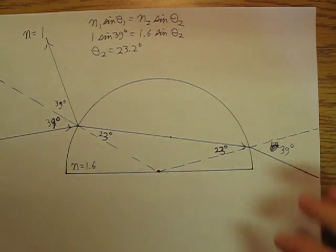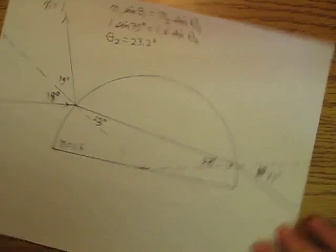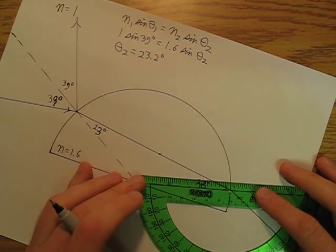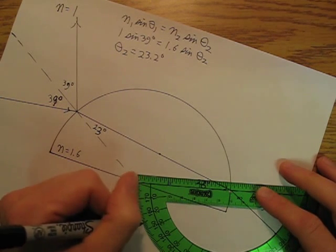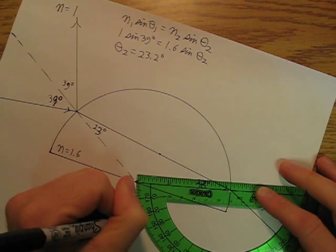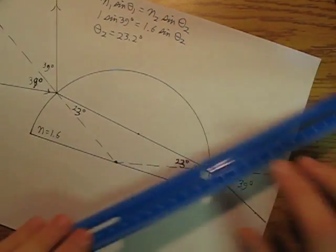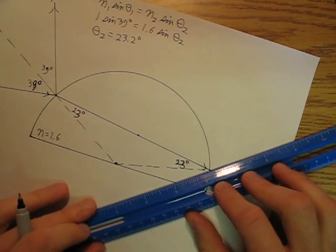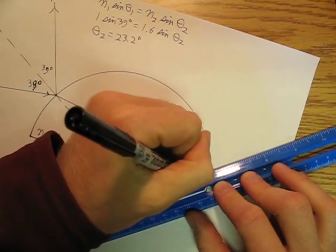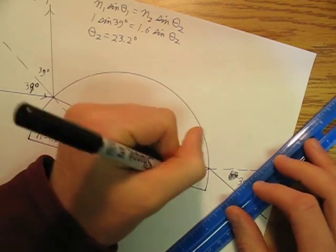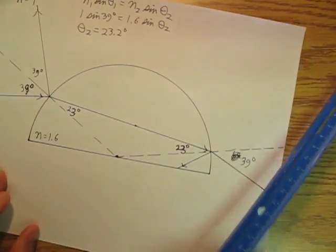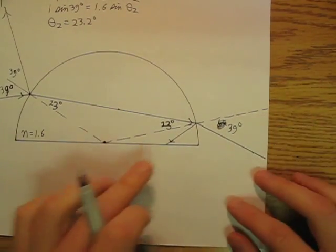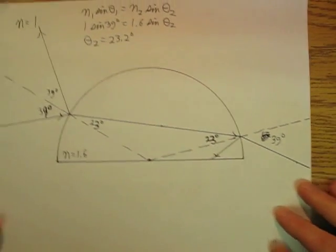Okay, and again, there's going to be a little bit of reflection right here. Some of this light is going to come in at 23 degrees. And then this is going to, then some of that is going to reflect and some of it's going to refract. But I'm not going to keep following this around forever and ever and ever.